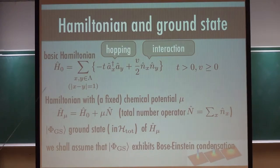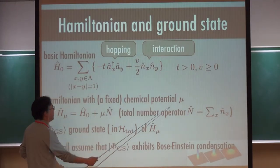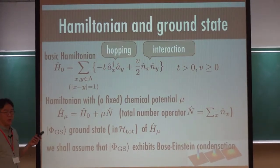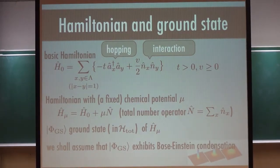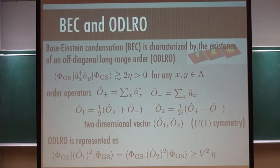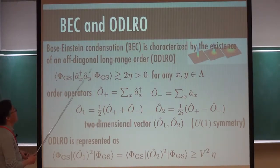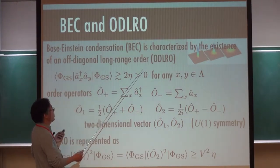The Hamiltonian is just standard. This is a hopping term where a boson is annihilated here and created here at neighboring sites — so the boson hops to the neighboring site. This is just the nearest-neighbor interaction. This is the real Hamiltonian without chemical potential. But to control the number of bosons, it's convenient to introduce chemical potential mu. And the best characterization of BEC is in terms of something called off-diagonal long-range order.